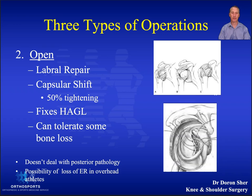The open capsular shift is particularly useful when the patient has an acute glenoid fracture, or if they have hyperlaxity and you need to significantly tighten the capsule. It is also the best operation to address a HAGL lesion.